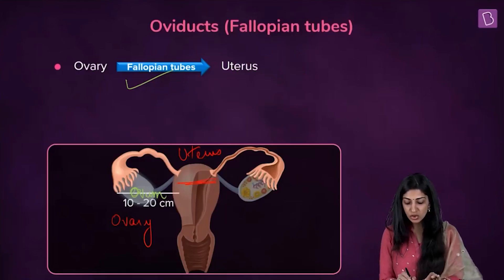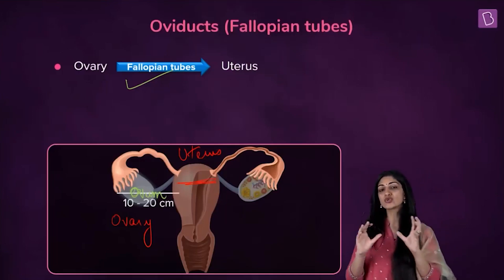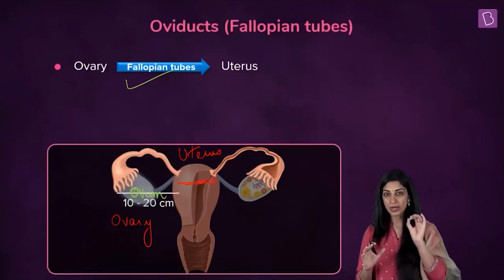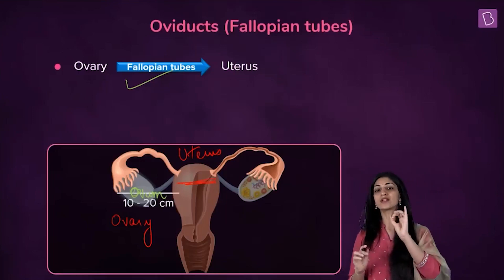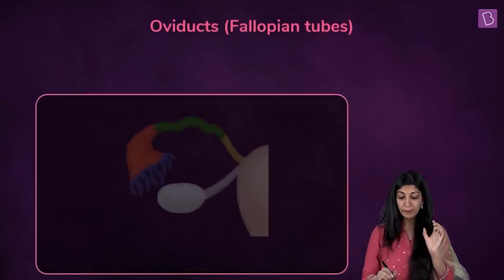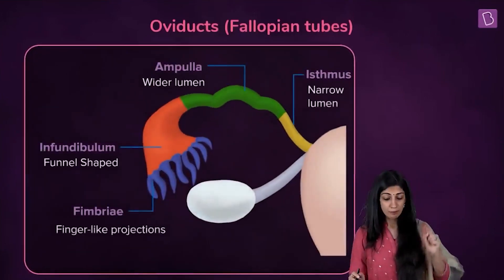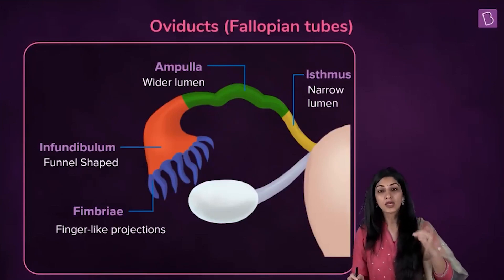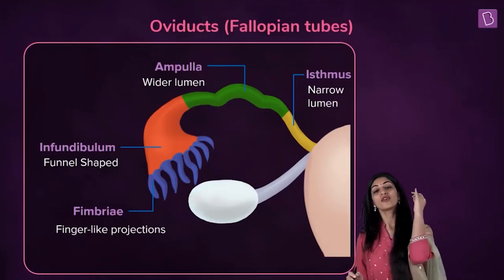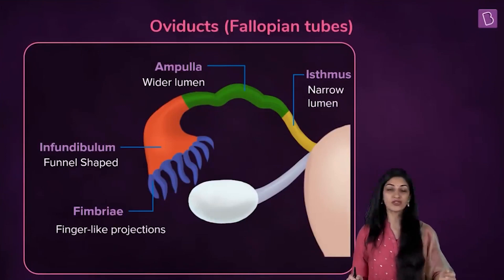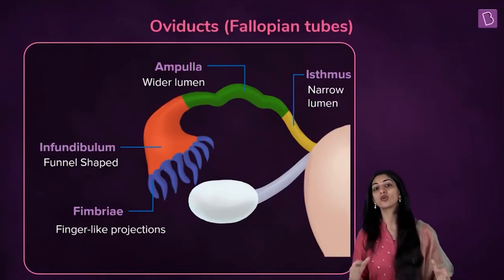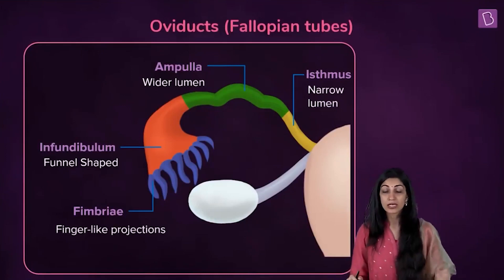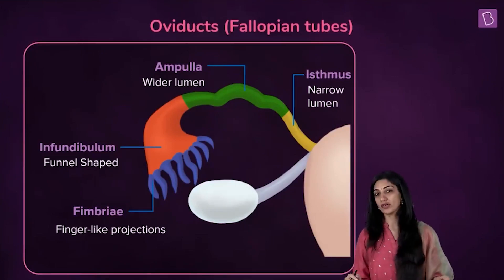This fallopian tube is approximately 10 to 20 centimeters in length — you don't have to remember that. But what is very, very important — important for your board exam and your NEET exam — are the parts of the fallopian tube, the structure of the fallopian tube.